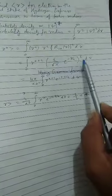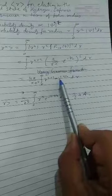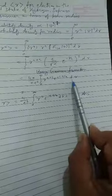This equals 4 pi by pi A cube R^(n+2) e to the power minus 2R by A dR.